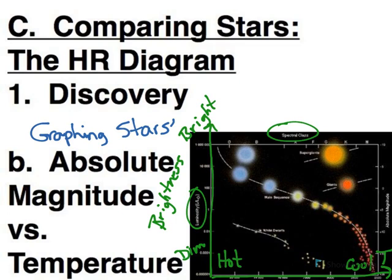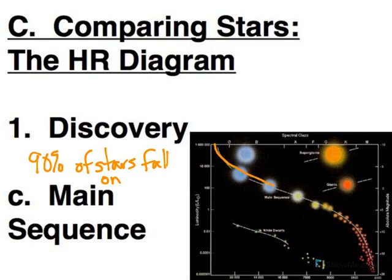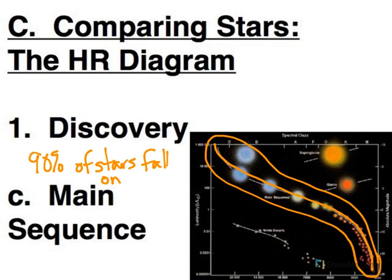So both these guys made these measurements of stars. They measured their temperature, they determined the absolute magnitude, and they plotted it on a graph. What they found was that 90 percent of the stars fall on a region that ultimately became called the main sequence because most of the stars were found there. So it's the main sequence, and that's this region right in here. So 90 percent of all stars follow this pattern that we see.